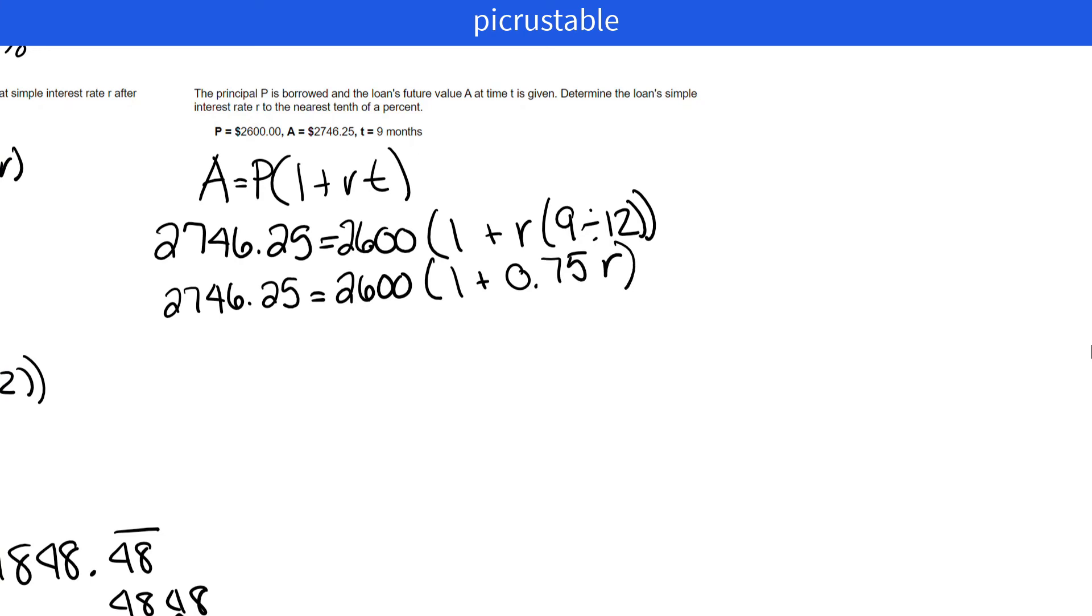We're going to have 2,746.25 equals 2,600 times 1 plus 0.75R. Now what we need to do is we need to do the distributive property. So we'll still have $2,746.25 on the left. 2,600 times 1 is 2,600 plus 2,600 times 0.75 is 1,950R.